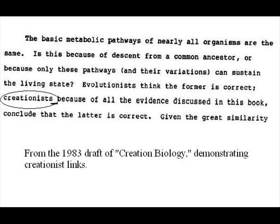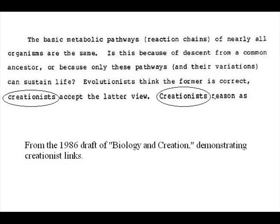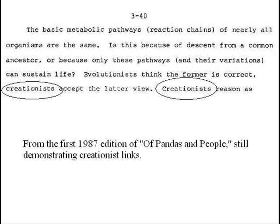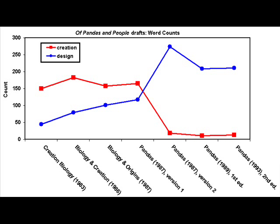The second and most telling event regarding the origins of intelligent design is the subsequent changes made to the new editions of a creationist textbook. In 1983, Creation Biology was first published and the book made no apologies for its direct use of the term creationism within its pages. In later editions and under different titles, the usage of the word creationism fluctuated somewhat, but in 1986's Biology and Creation, 1987's Biology and Origins, and later in 1987's Of Pandas and People, the word creationism — a distinctly religious word — was used no less than 100 times throughout each draft.